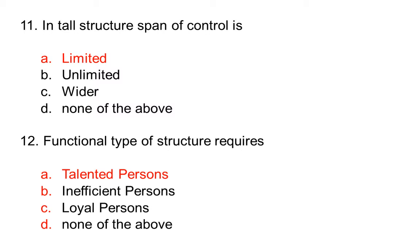Functional type of structure requires: option A talented persons, option B insufficient persons, option C loyal persons, option D none of the above. The correct answer is option A, talented persons.